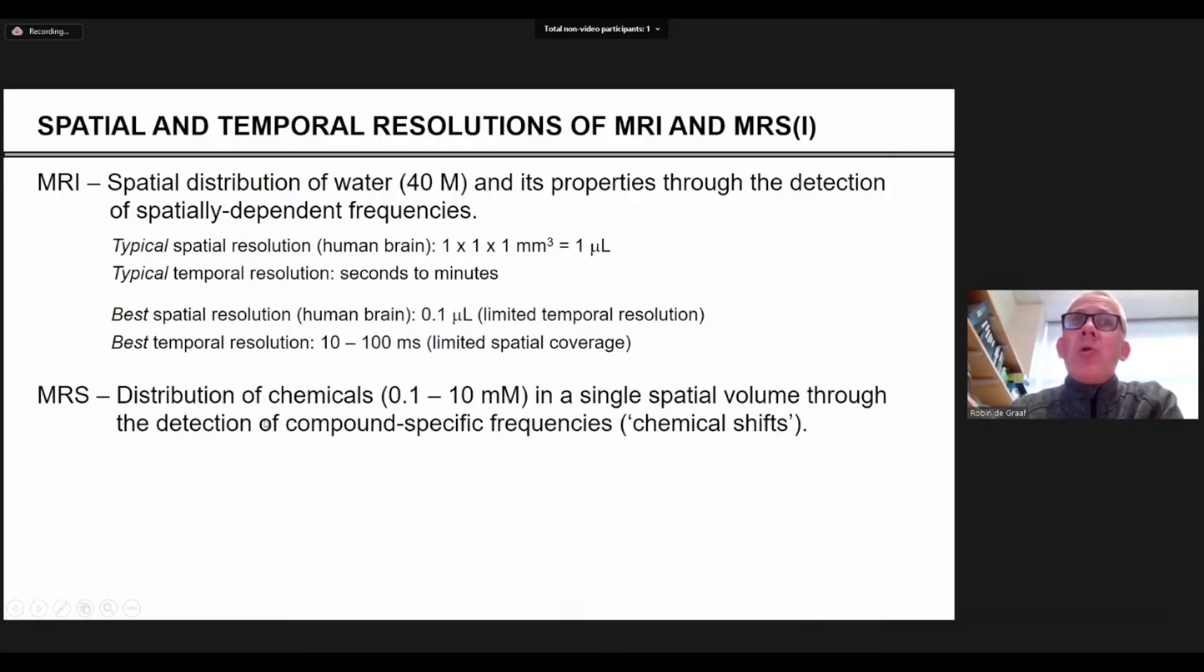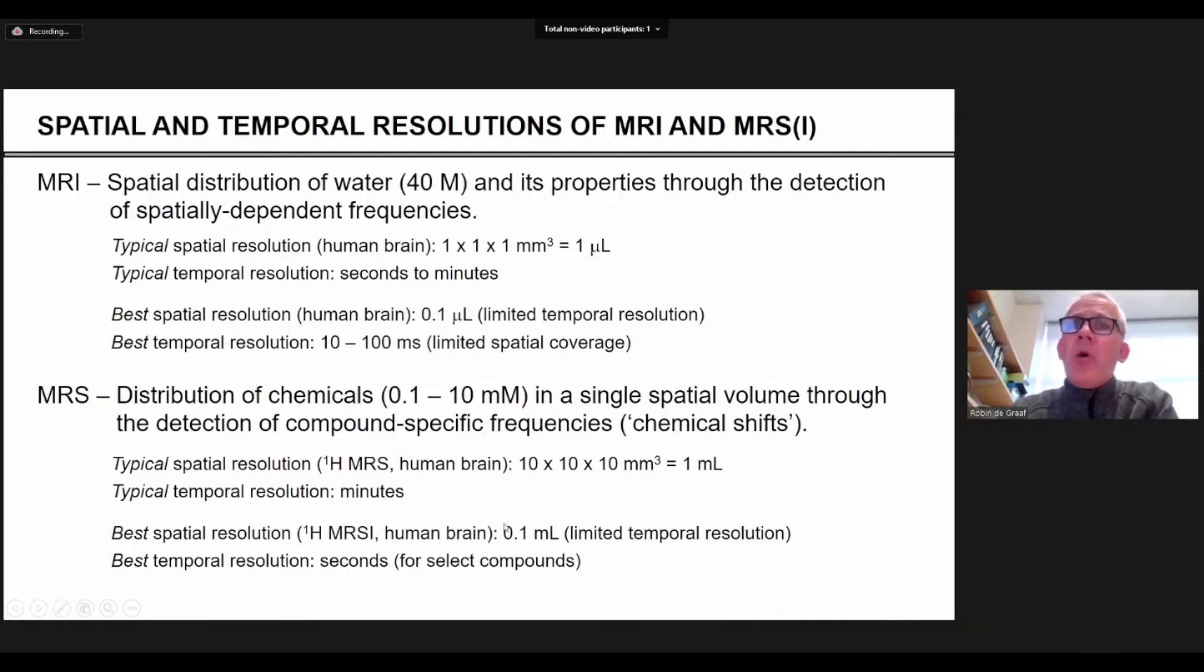MRS spectroscopy is basically looking at all other chemicals, not water. And so they are typically in a millimolar range. You acquire them from a single volume in space and the frequencies that you detect are chemical specific, also referred to as chemical shifts. The spatial resolution for proton MRS is about one ml and you can acquire that in minutes. And if you really push this, you can go about an order of magnitude better on the spatial resolution and the temporal resolution you can go seconds for select compounds. MR spectroscopic imaging is a logical combination of the two where you get images of specific metabolites at the spatial resolution of MRS.